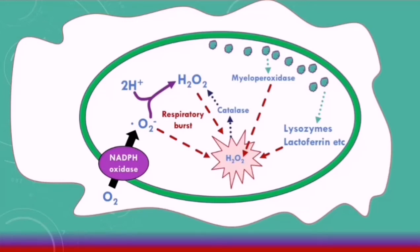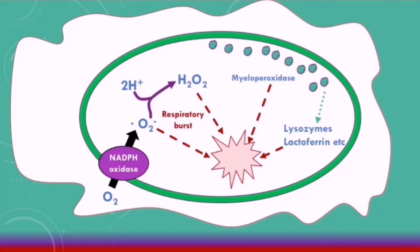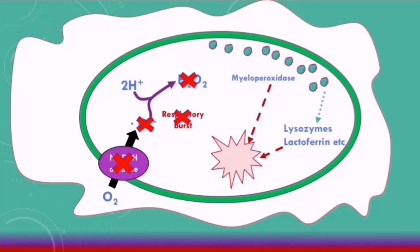Let's now see what happens in chronic granulomatous disease. CGD is an inherited deficiency in one of the subunits of the NADPH oxidase enzyme, with inheritance that could be autosomal recessive or X-linked. Because the NADPH oxidase enzyme is not working, oxygen will not be converted into superoxide radicals, meaning little hydrogen peroxide is produced. As a result, the respiratory burst is reduced and the phagocytes lose their most effective way of killing pathogens.